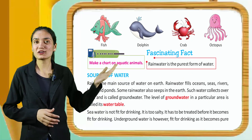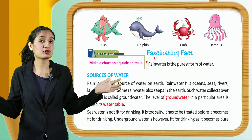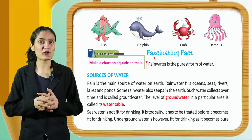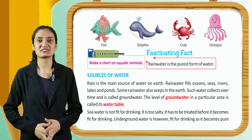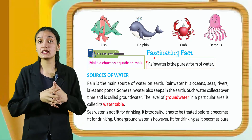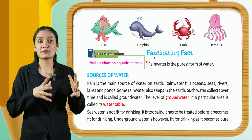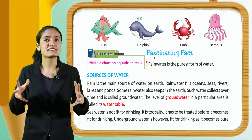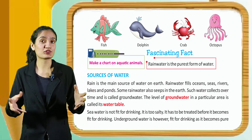Activity: Make a chart on aquatic animals. Fascinating fact: Rain water is the purest form of water. Now, sources of water — rain is the main source of water on Earth. Rain water fills oceans, seas, rivers, lakes, and ponds.